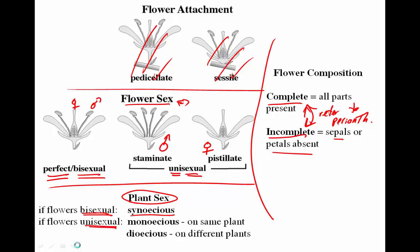If the flowers are unisexual, there are two possibilities. They can be monoecious, where male and female are on the same plant — 'mono' meaning one, 'oecious' meaning house, one plant with two different sexes of flowers. Or we can have dioecious — 'di' meaning two, two houses — so the male and female are on different plants.